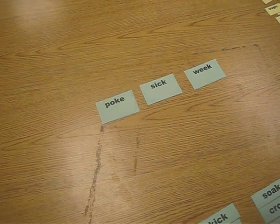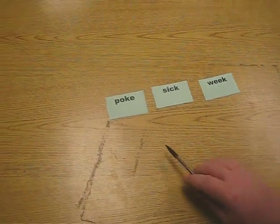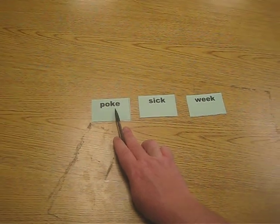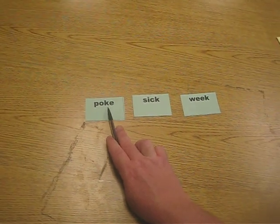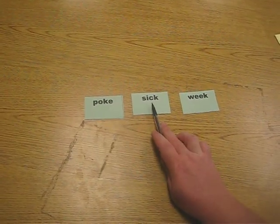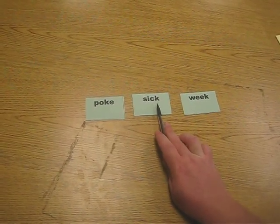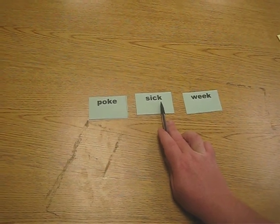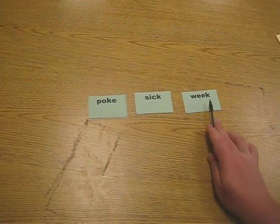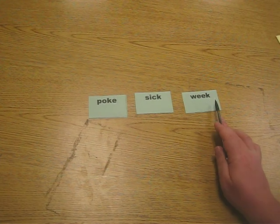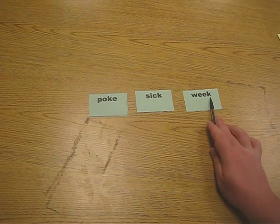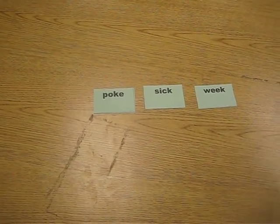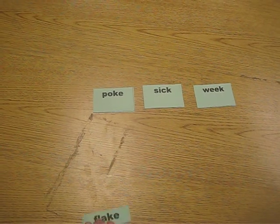Alright, so we have the I6 word sort here. We have three columns, as you can see. We have poke — there's a KE on the end. We have sick — we have CK on the end. And we have weak. Pay special attention to this one; we have a K on the end of this one. So let's take a look.